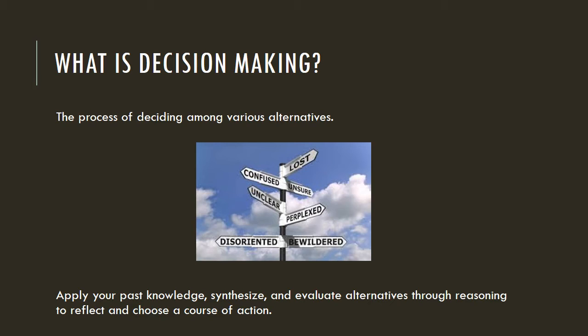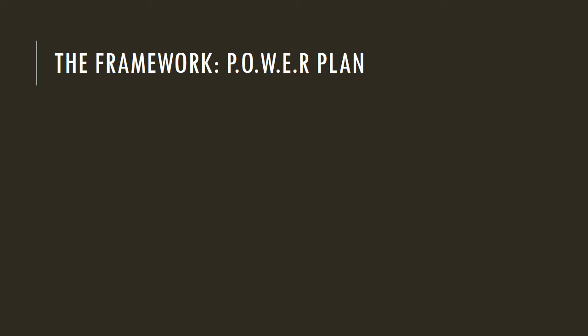To make a good decision, map out a strategy for making the choice that is best for you. Every decision can benefit from systematically thinking through the options involved, which brings us to the POWER plan. It starts with P, which is to prepare. Every decision starts with the end in mind — the goal that you wish to accomplish. Identifying that goal ensures you make a decision that will actually get you closer to it.